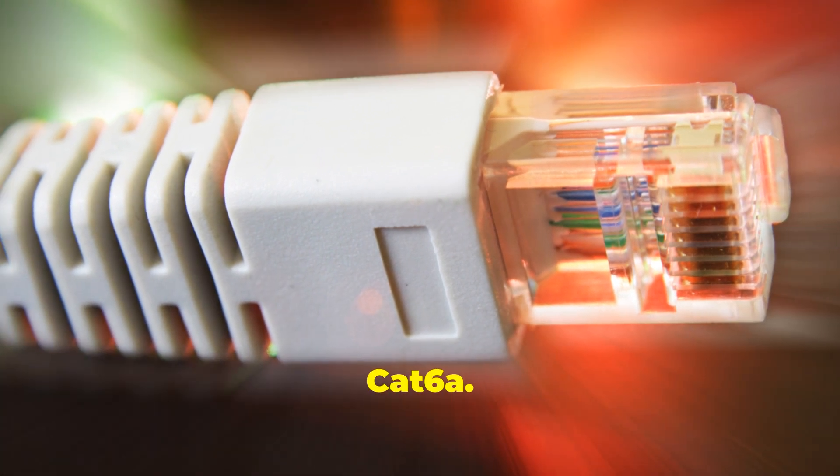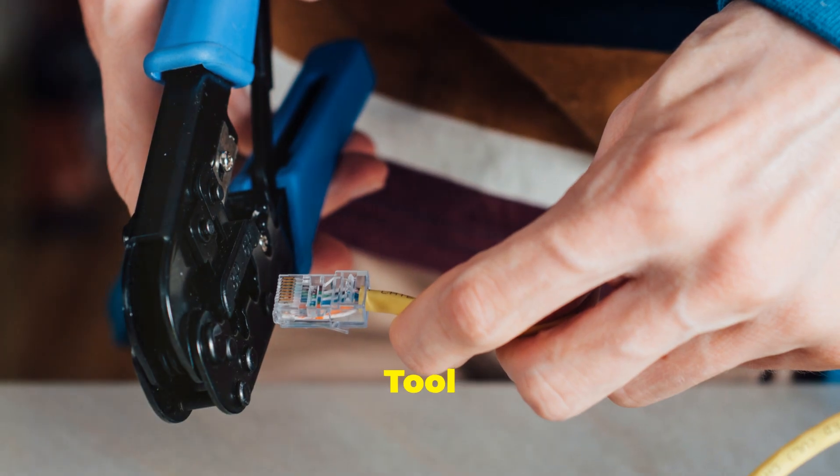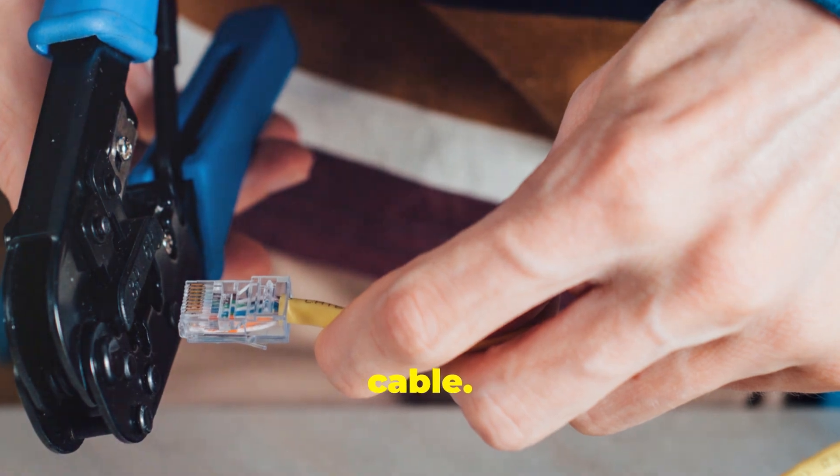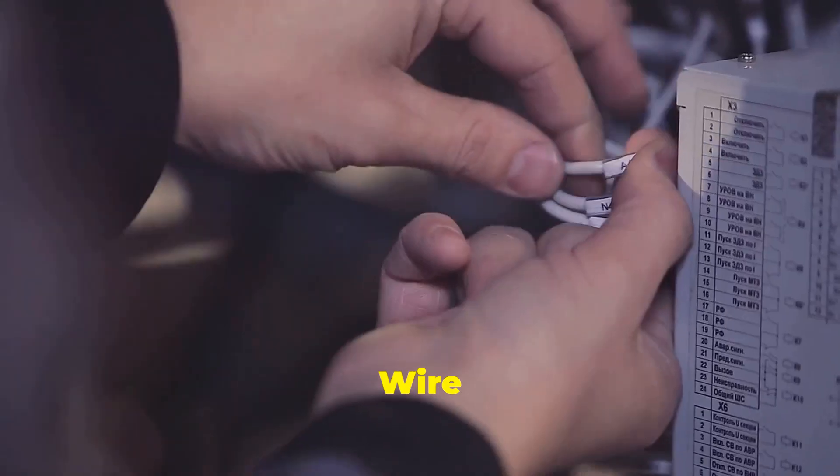Crimping tool: this handy tool is essential for securing the connector to the cable. A good crimping tool will ensure a solid connection and prevent future issues. Wire cutters: used for trimming the cable and wires to the correct length. Precision is key here to avoid damaging the wires.